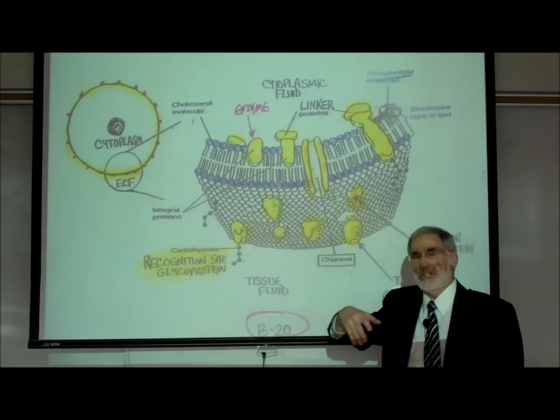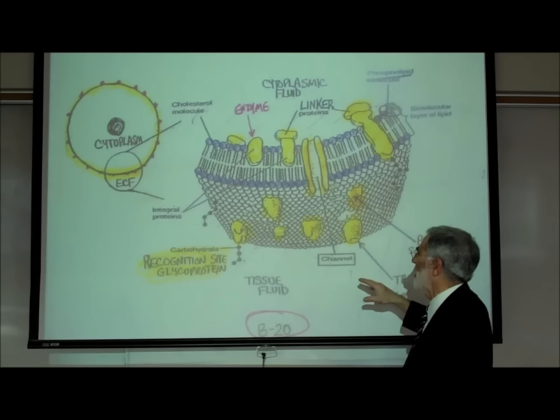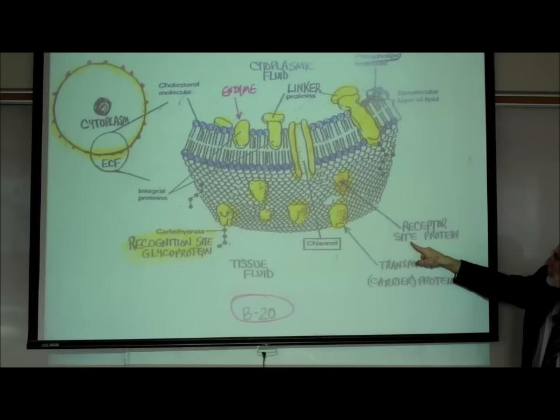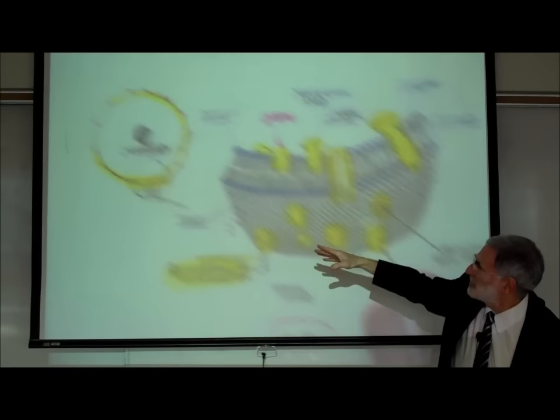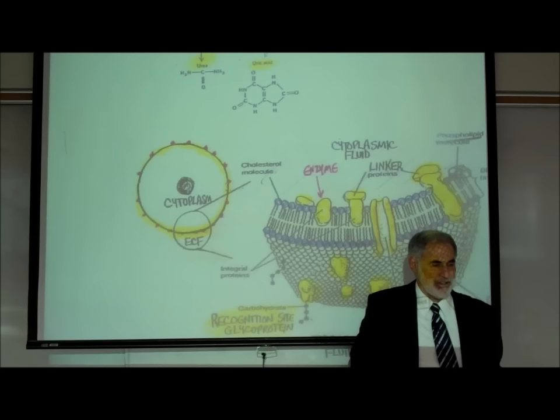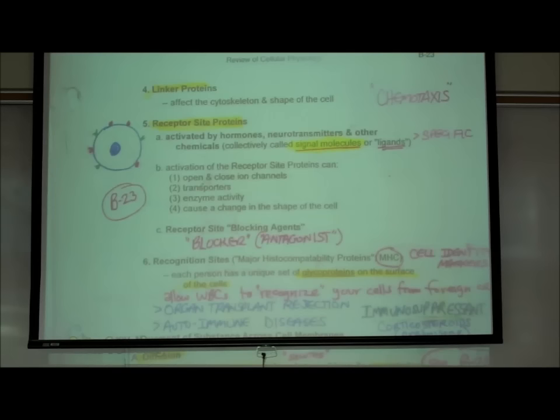This is page B20. We've been looking at the cell membrane and describing some of the roles of the proteins embedded within it. Another very important role of these proteins is as receptor site proteins. These receptor site proteins are located on the outer surface of the cell membrane — they are sticking out, projecting out on the outside surface.